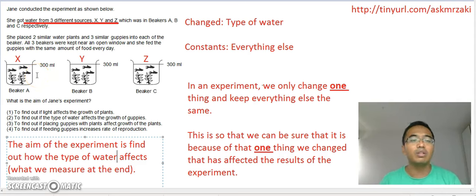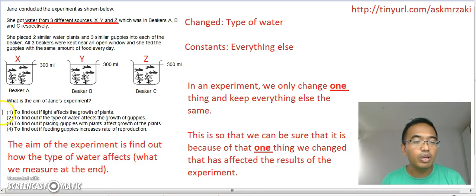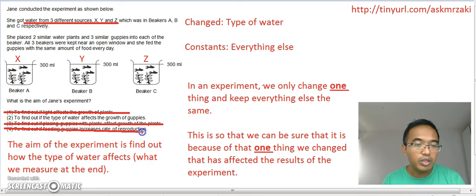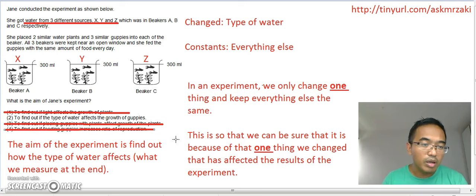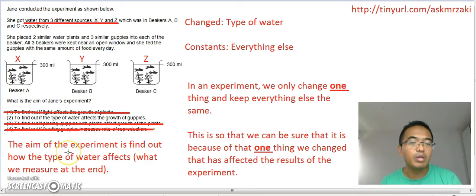If we look at the setup, we can measure several things — the growth of the guppies, the growth of the plants, and so on. Looking at the options: number one is not correct because we didn't change the light; number three isn't correct because we put the guppies and plants together in all three setups and didn't change that; and number four is incorrect because we didn't change the feeding of the guppies — our setups didn't show anything about how the guppies are being fed. So the answer is number two: the aim of the experiment is to find out how the type of water affects the growth of guppies.